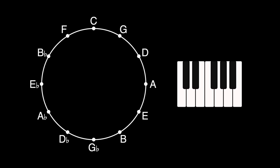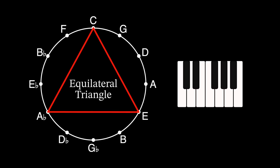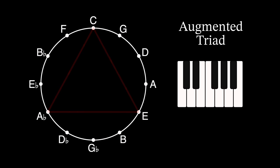The simplest regular polygon is an equilateral triangle, and on the circle of fifths, an equilateral triangle forms an augmented triad. That is, the root, the major third, and the sharp fifth, or augmented fifth.